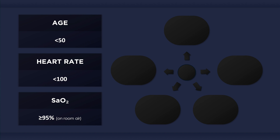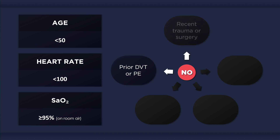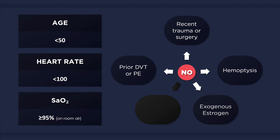For the next five criteria, none of the following should be positive. There should be no prior history of a deep venous thrombosis or a pulmonary embolism, no recent surgery or trauma requiring hospitalization, no hemoptysis (that is, no coughing up of blood), no exogenous estrogen use such as the contraceptive pill, and no unilateral leg swelling.